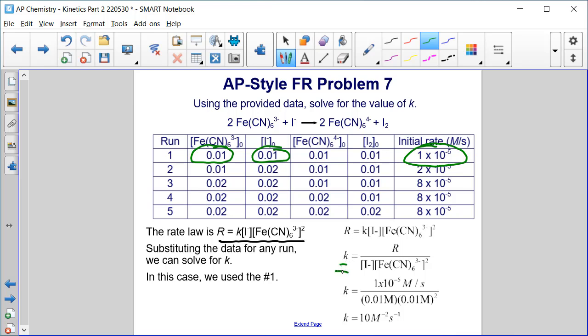I rearranged for K since that's what we're solving for. The rate is 1×10^-5 M/s divided by [I-] = 0.01 M times [Fe(CN)6^3-]^2 = (0.01)^2. We get K = 10 M^-2 s^-1.